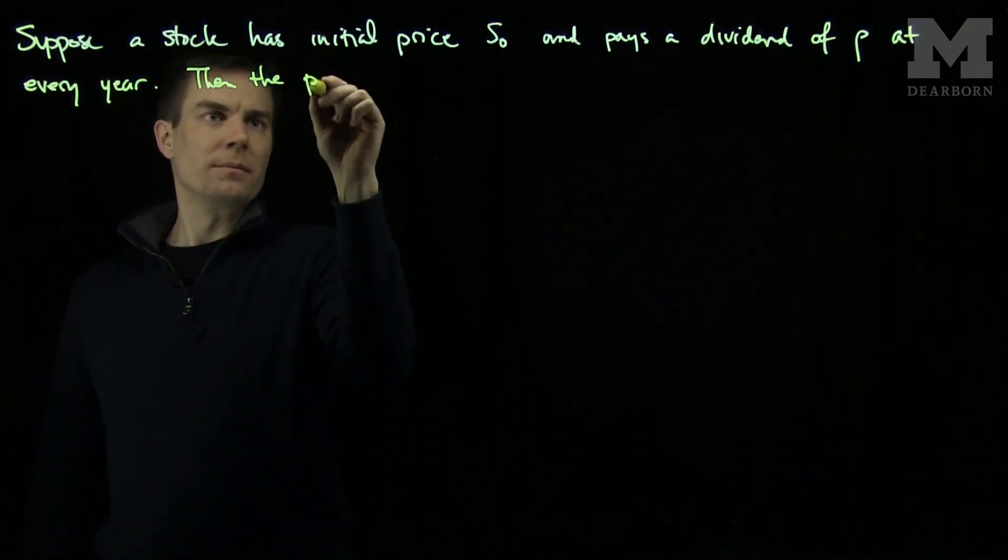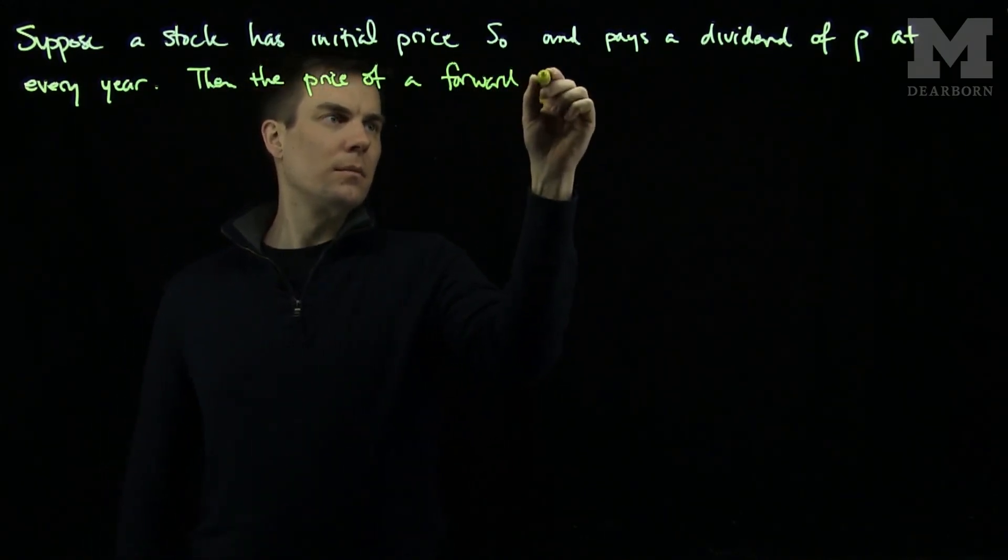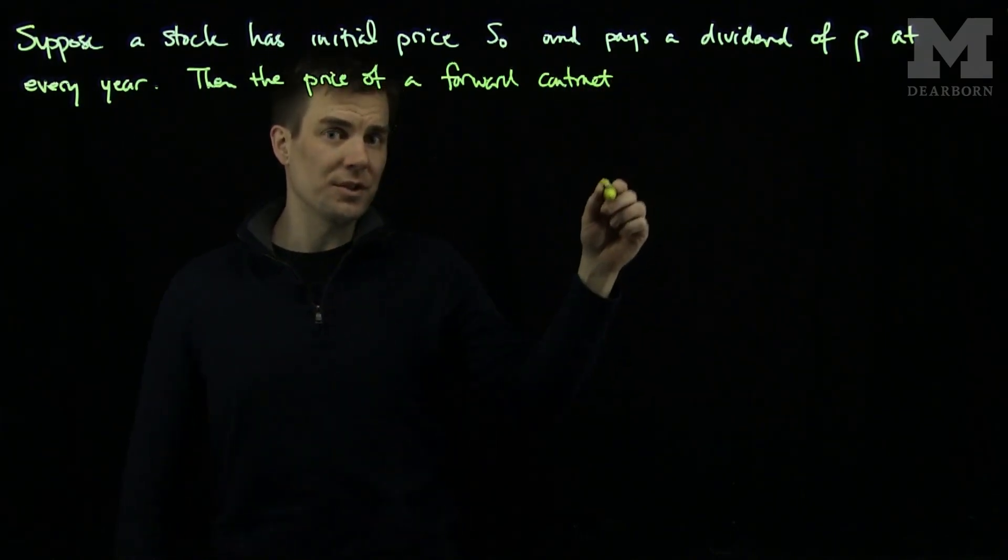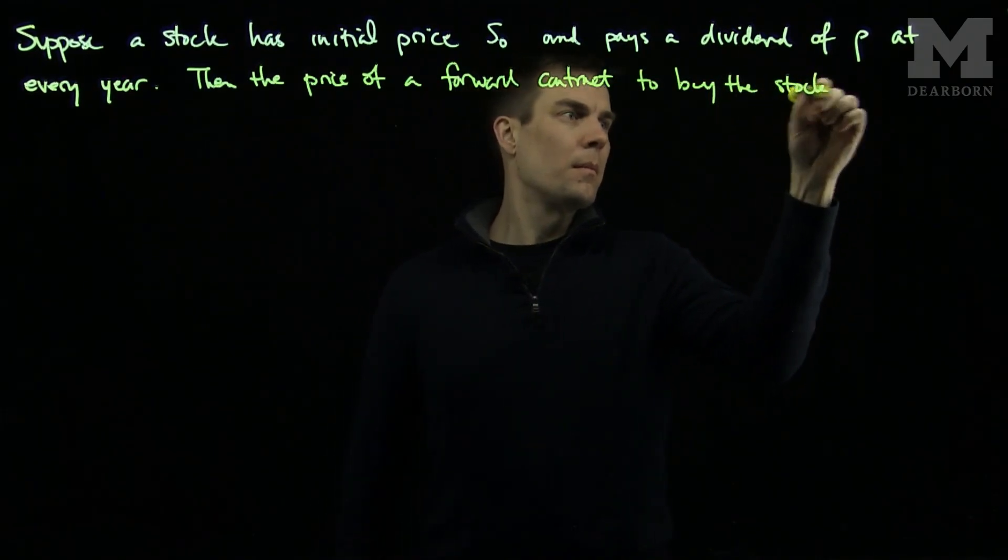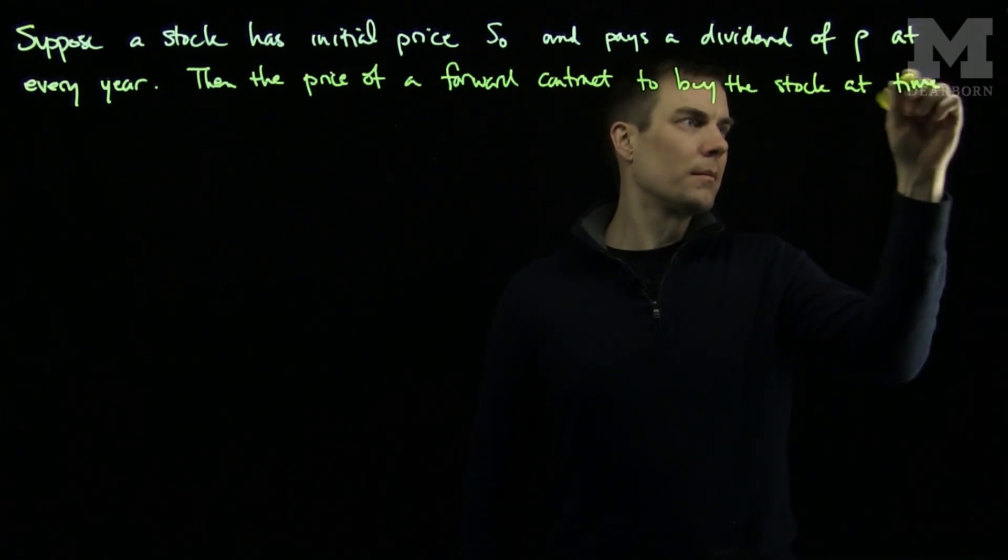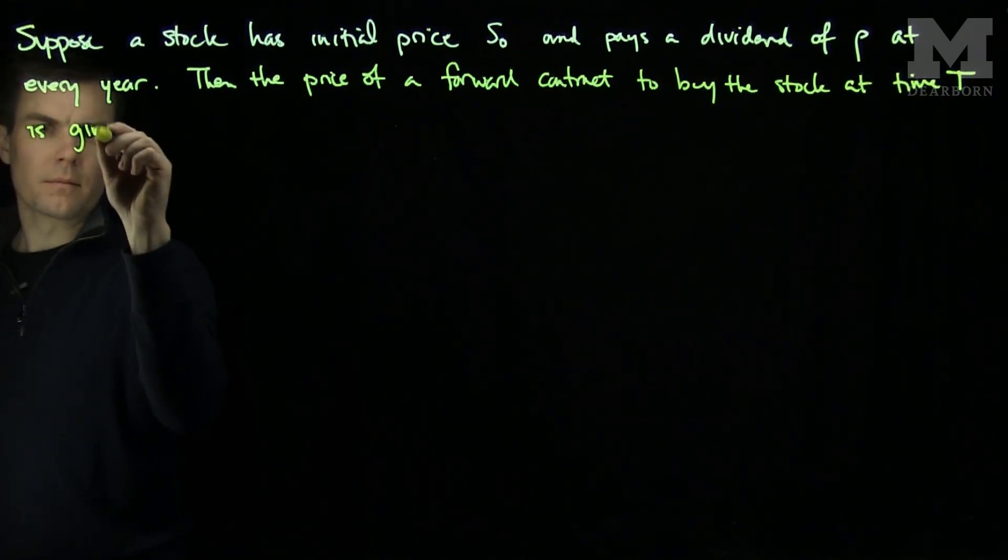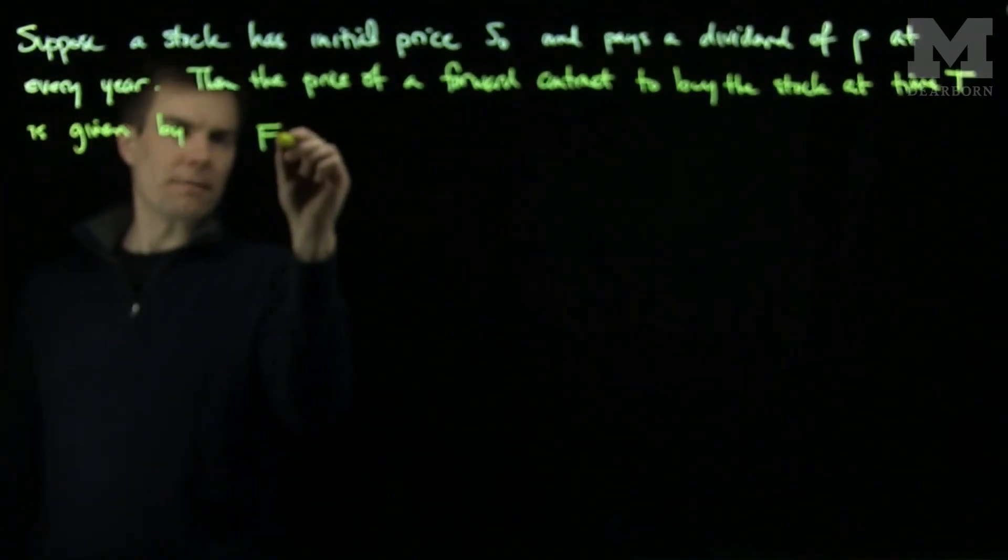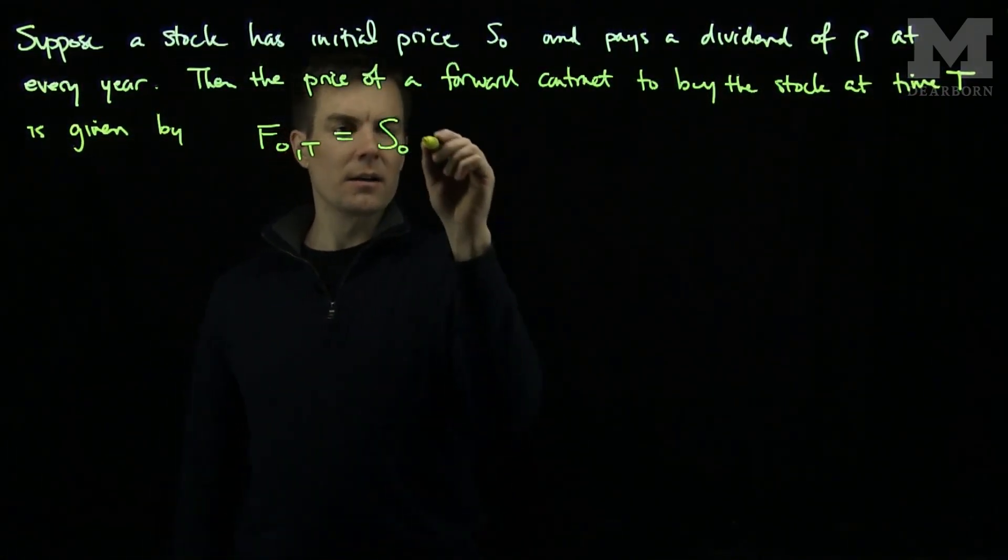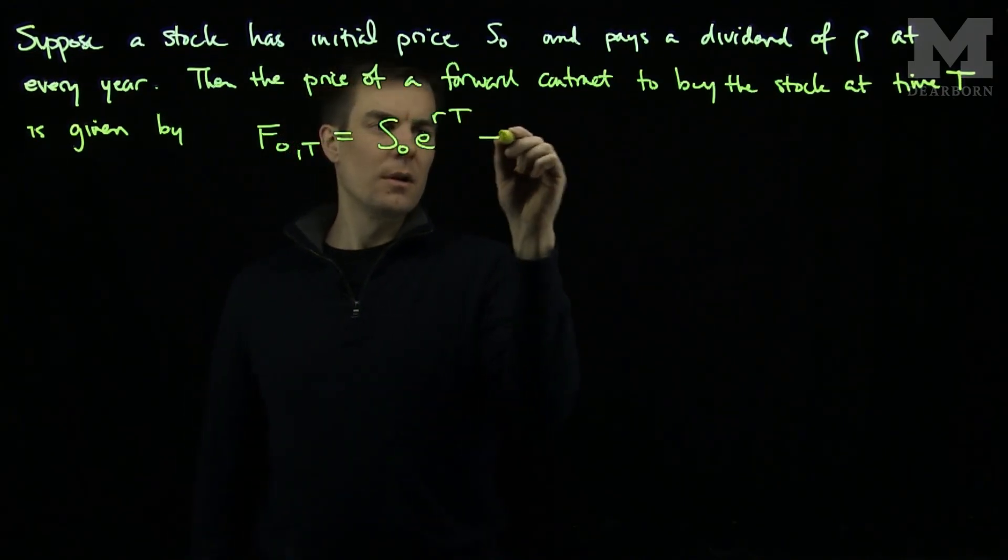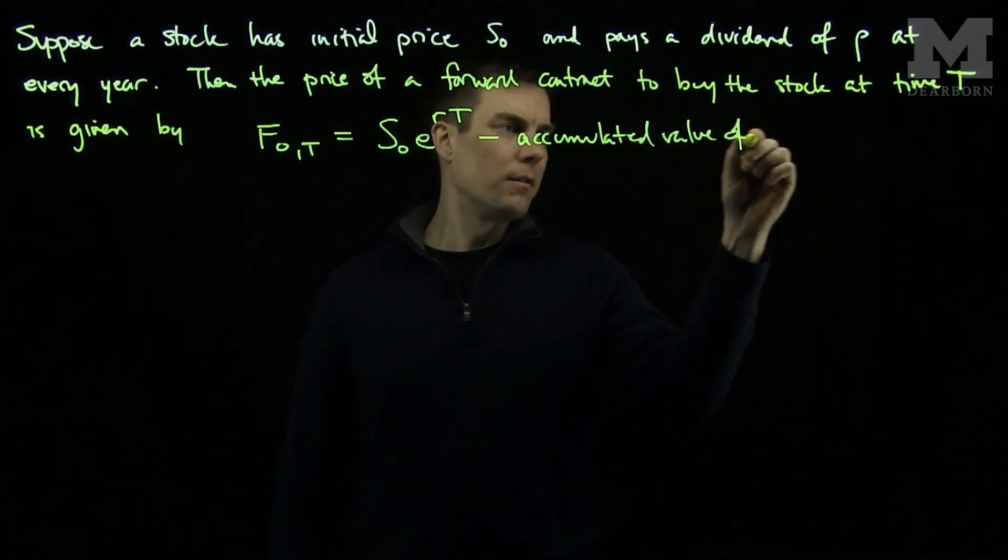Then, the price of a forward contract to purchase the stock at time T is given by the following formula. F0T is the initial price of the stock, e to the rt, minus the accumulated value of the dividends.